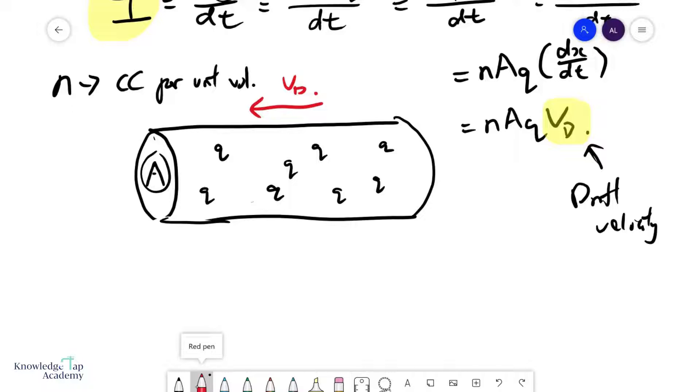Now, all of these particles, let's consider one of them, would be in random motion. When I turn on the potential difference, what happens? There could be a potential difference over here.